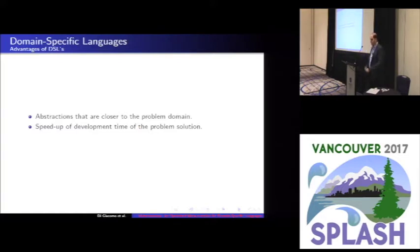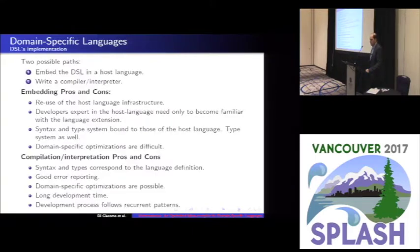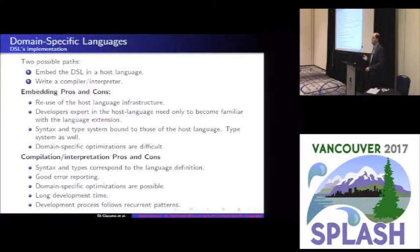This allows us to speed up game development. In general, DSLs offer abstractions that speed up the development process. There are two possible paths: either we embed the DSL in a host language, or we write a compiler or interpreter for it. Both solutions have advantages and disadvantages. The advantage of embedding is that we can reuse the host language infrastructure, and someone familiar with the host language only needs to learn the new abstractions.